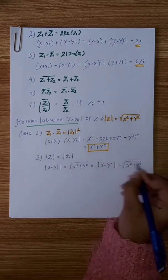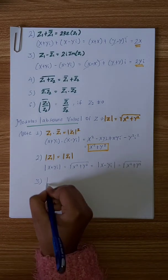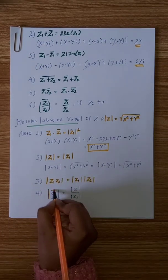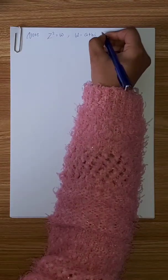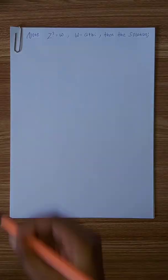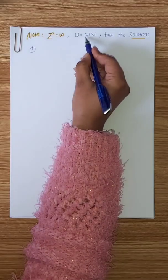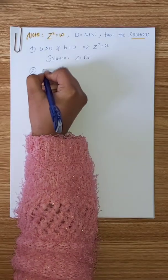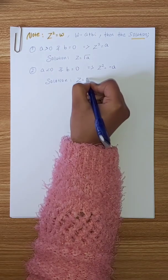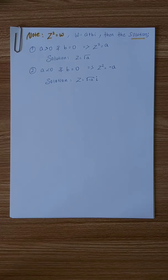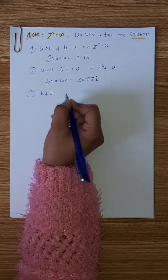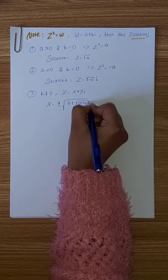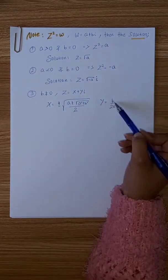The modulus squared of z equals x squared plus y squared. In the case where the imaginary part is zero, the real part gives z squared equal to a, so z equals the square root of a. If the real part is zero, z squared equals negative a, and the solution is the square root of negative a times i.